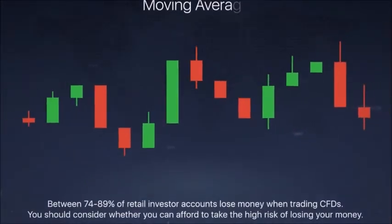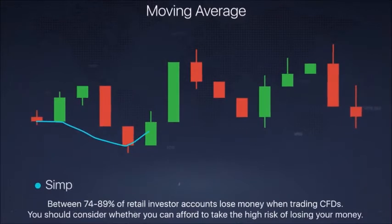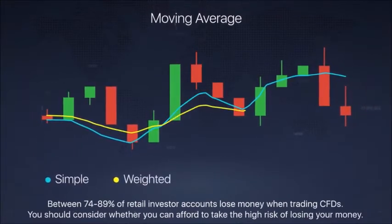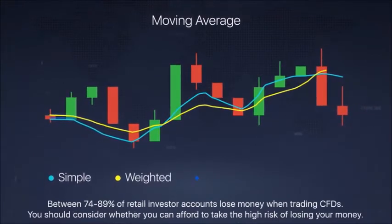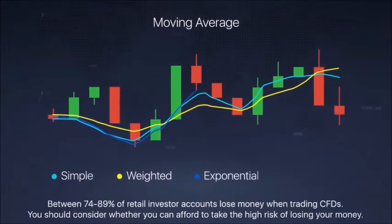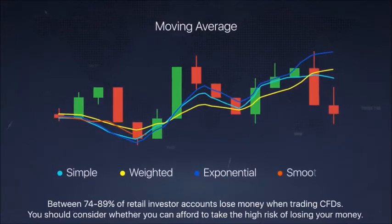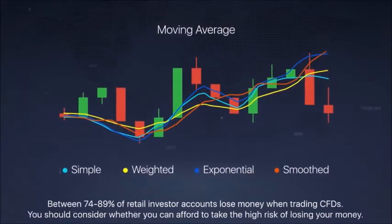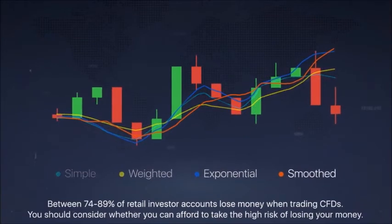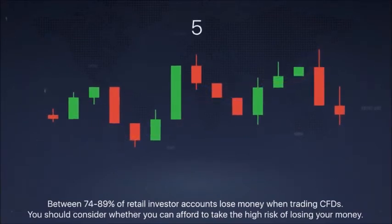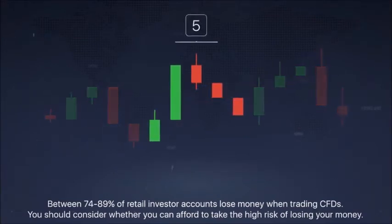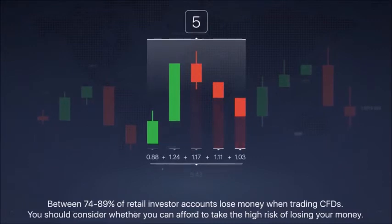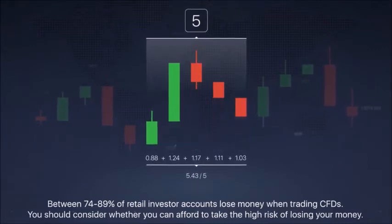A moving average indicator is a main indicator that shows price movement direction. When processing moving averages, the mathematical pricing average of a particular period is measured by candlestick quantity. For example, in order to calculate the value of a 5 candlestick period, the indicator divides the sum of their closing values by 5.